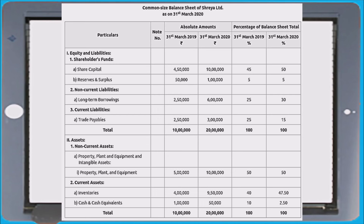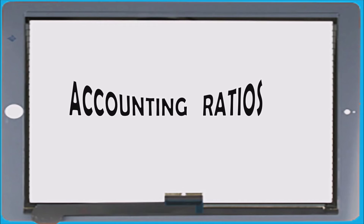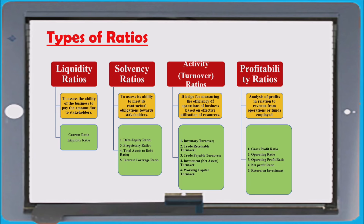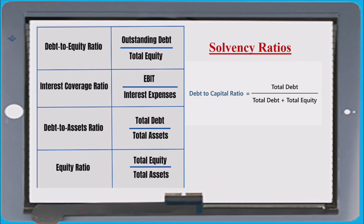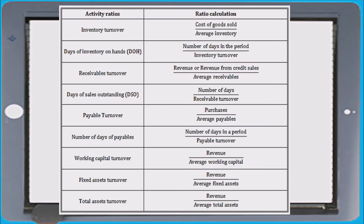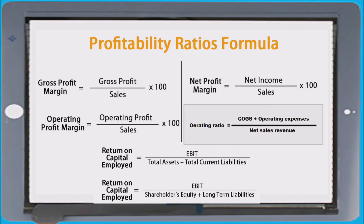Sure questions will be there for format. Regarding ratios, you have to remember four categories: liquidity ratios, solvency ratios, activity or turnover ratios, and profitability ratios — remember the equations also. Liquidity ratios include current ratio and quick ratio. Solvency ratios include debt ratio, interest coverage ratio, debt-to-assets ratio, debt-to-capital-employed ratio, total assets to debt ratio. Activity ratios include inventory turnover ratio, trade receivable turnover ratio, trade payable turnover ratio, working capital turnover ratio, fixed asset turnover ratio, and net asset turnover ratio. Profitability ratios include gross profit ratio, net profit ratio, operating ratio, operating profit ratio, return on investment, and return on capital employed.